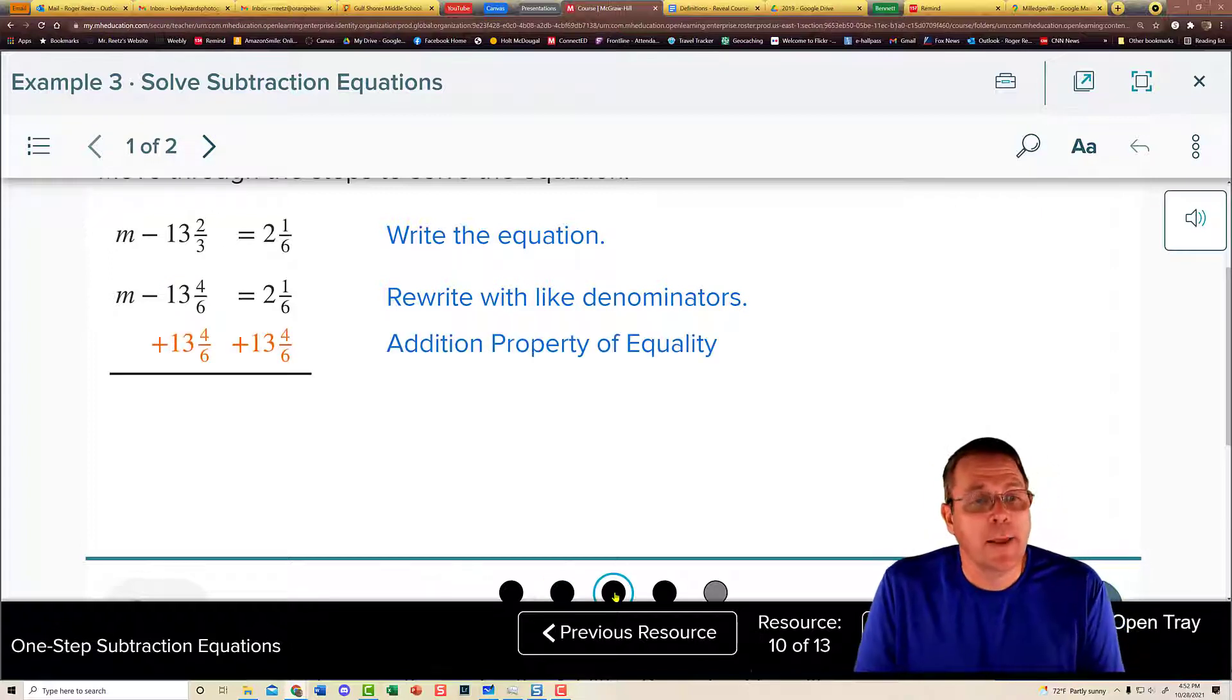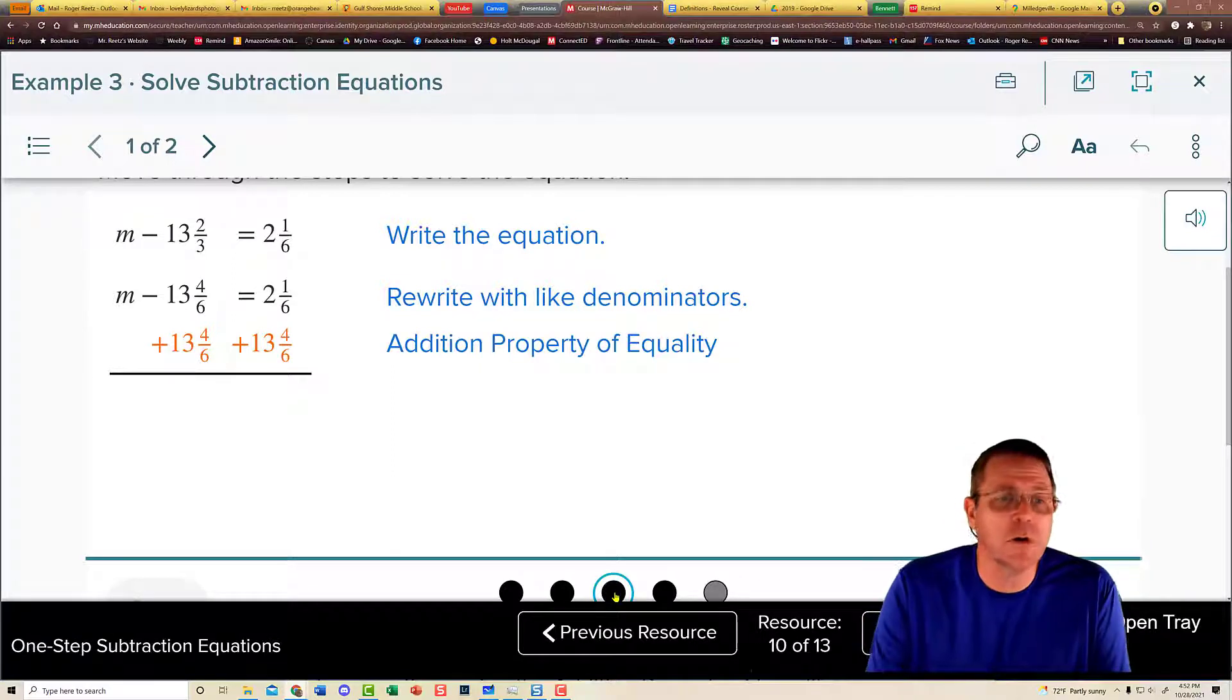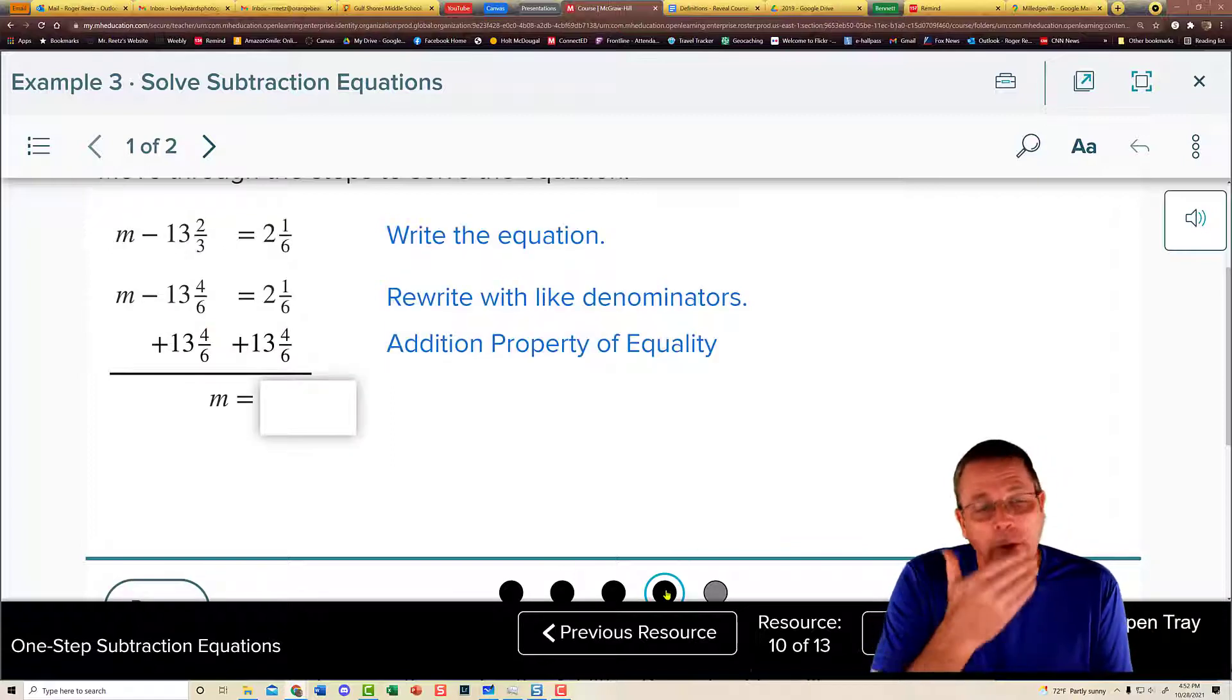And from there, we're going to add 13 and 2 thirds, also known as 13 and 4 sixths to both sides. And while it's efficient to do it this way, it's scary. I mean, look at fractions and mixed numbers on top of fractions and mixed numbers. And no, it just doesn't work good. So we're going to take and zero these out right here by putting a line through them.